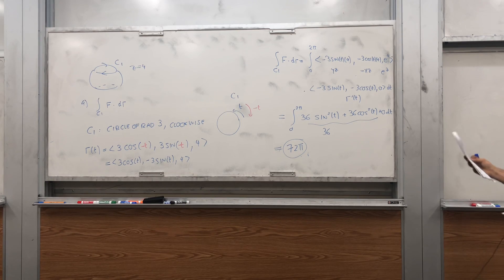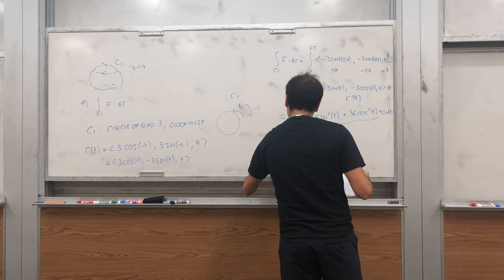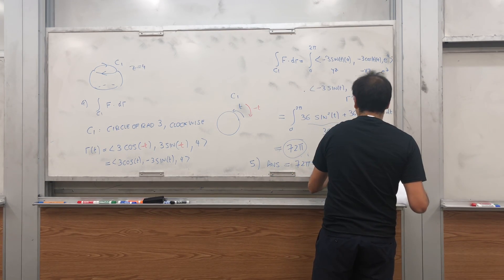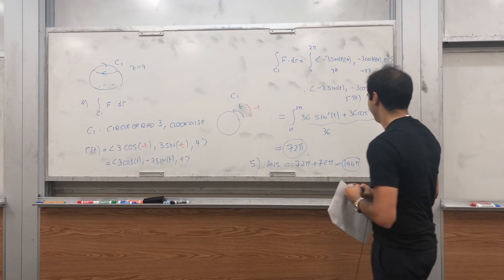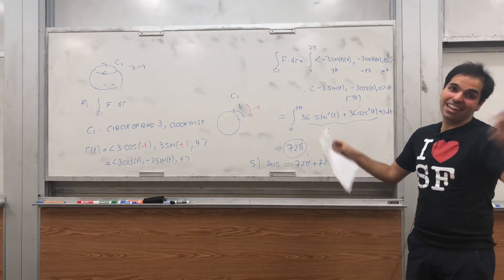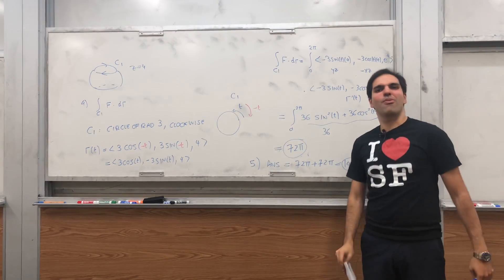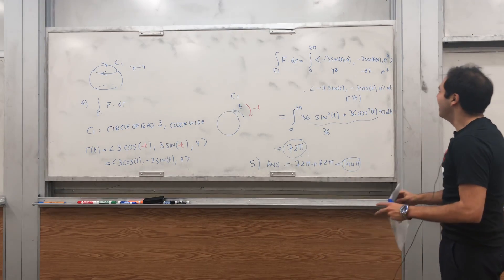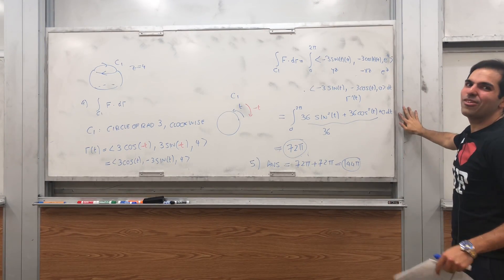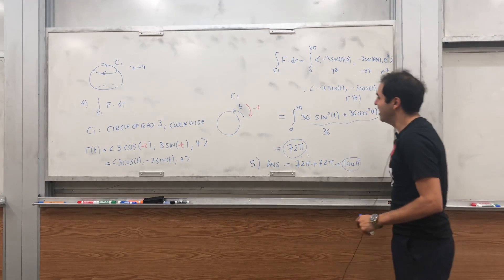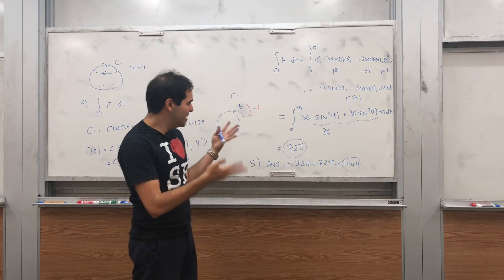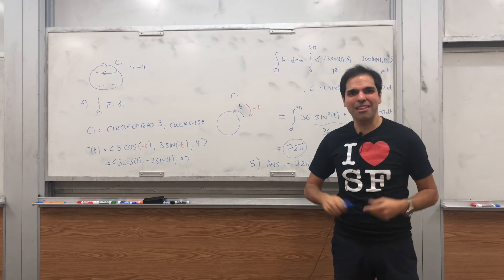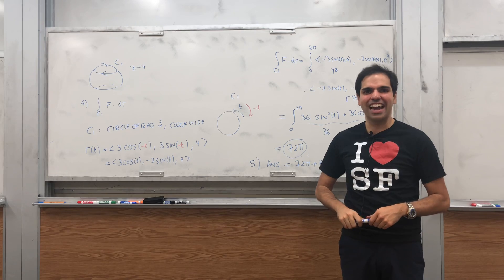Last but not least, to get our answer we add them together: 72π + 72π = 144π. That's a pretty hard problem — I don't understand how anyone could do it in 10 or 20 minutes, but it's Berkeley. I feel better now just getting four points on this — I survived! I hope you enjoyed this cute problem on orientation. If you liked it and want to see more math, please click like and subscribe to my channel. Thank you very much.